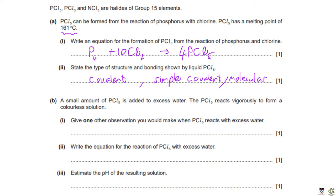A small amount of PCl₅ is added to excess water; it reacts vigorously in an exothermic reaction to form a colorless solution. Give one other observation. In addition to forming the acidic colorless solution (phosphoric acid), HCl gas is also produced. The observation for HCl gas is steamy or misty fumes.